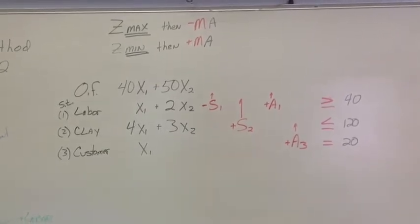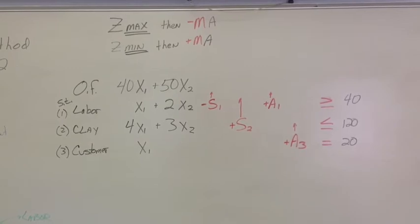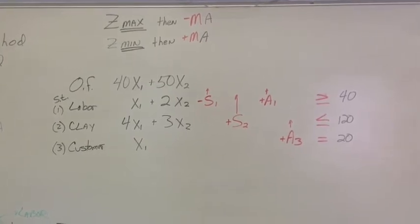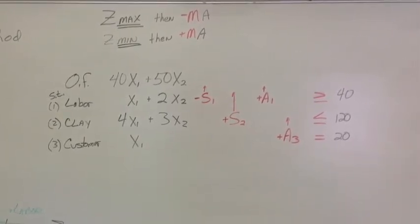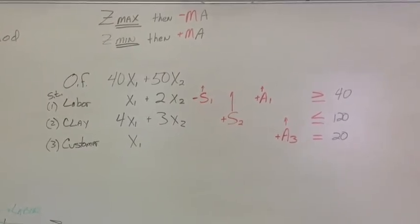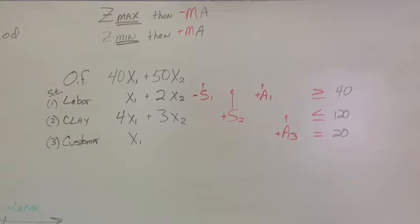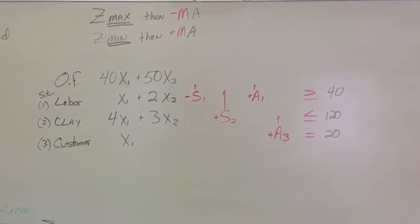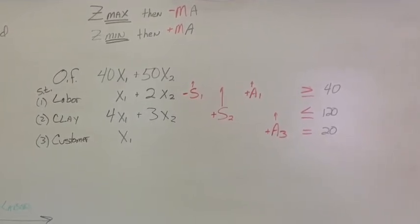And that was subject to three constraints: labor, clay, and customer requirements. So I kind of spread them out here so you can see how it all fits. But labor was a greater than or equal to, so we subtracted surplus and we added an artificial.